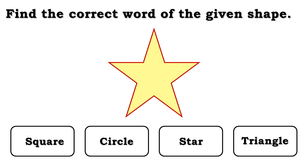Here, the words are square, circle, star, triangle. The correct one is star.